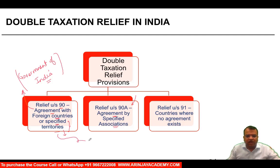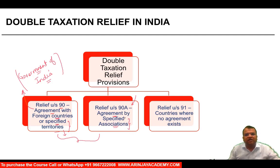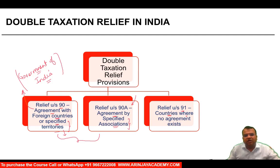In both cases, there are agreements either of the government of India or the specified association in India with some specified association outside India. The second case is where you can get relief under Section 91, and that applies in respect of those countries where the Indian government or the specified association has no agreement.